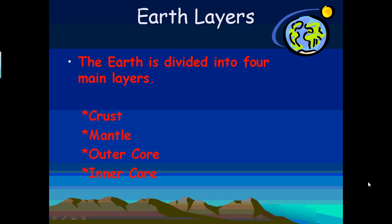Earth is divided into four main layers. These are the four layers you need to know about. First, we have the crust, which is the top layer, then the mantle, then the outer core, and finally the inner core at the center of Earth.